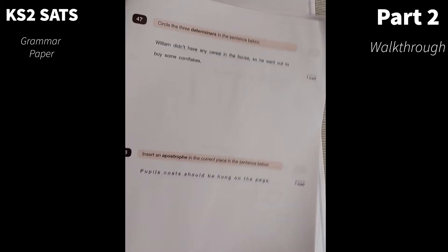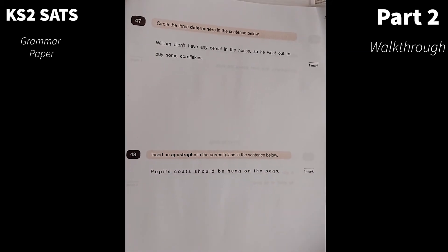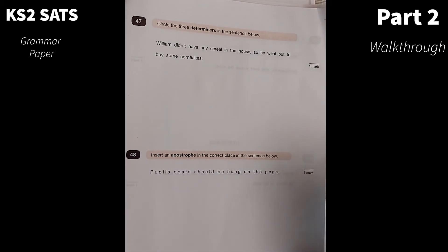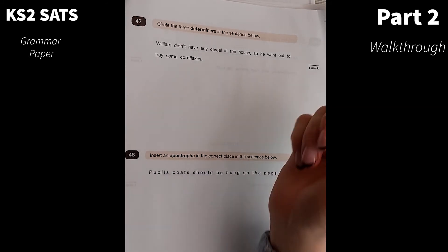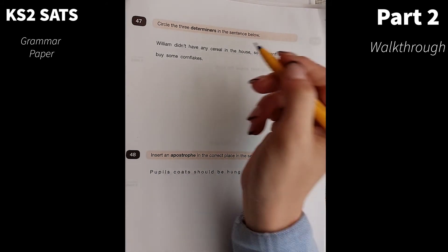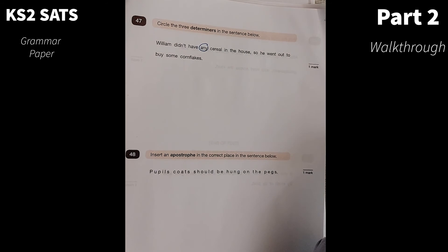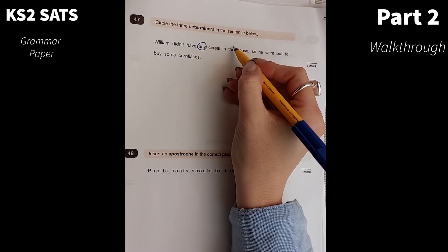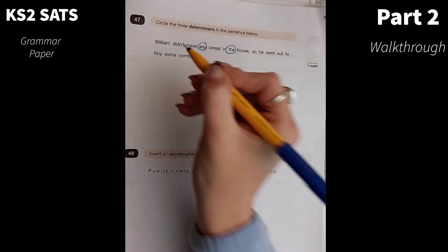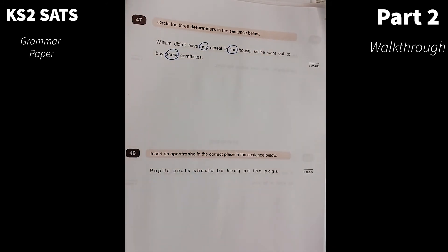Number 47. Circle three determiners in the sentence below. Determiners usually come before nouns. William didn't have any cereal in the house. So he went to go and buy some cornflakes. So we have the house and we have some cornflakes.